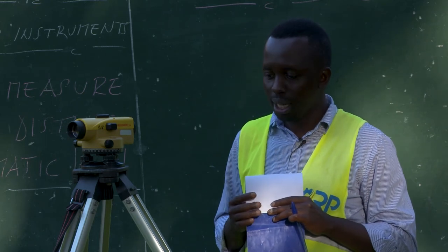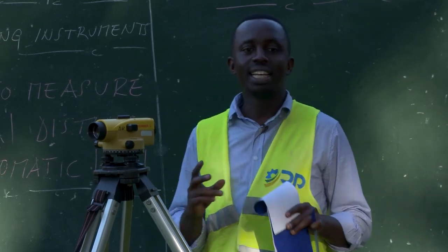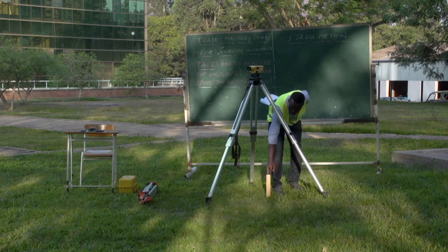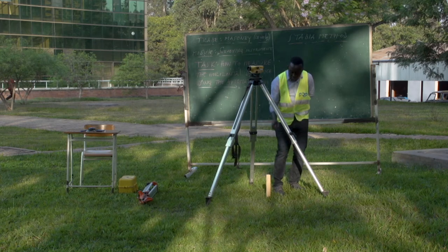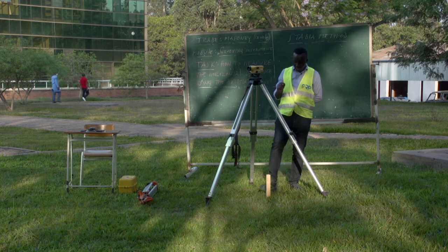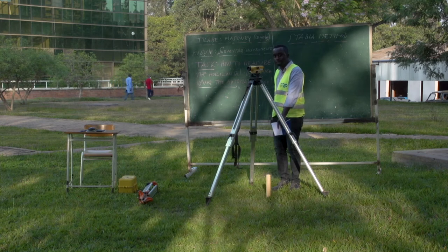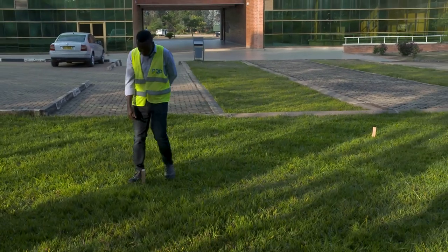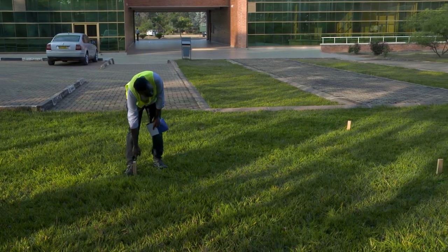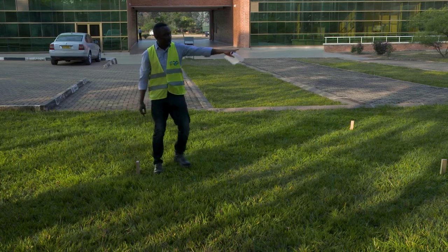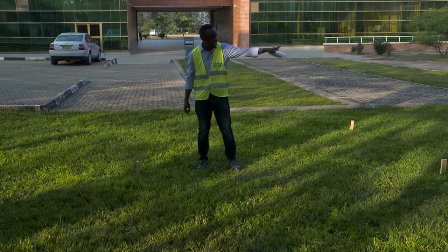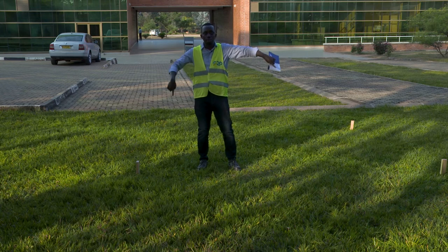This is how we are going to proceed. First of all, we are going to select two points. Let us suppose this is point number one — let's call it point A. Now let us find point B, or point number two. So we have two points: point A and point B. We are going to find the horizontal distance between these two selected points.